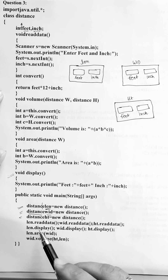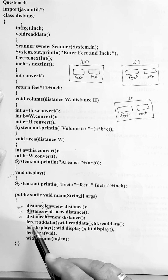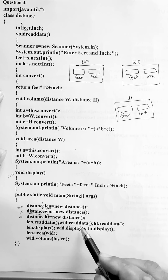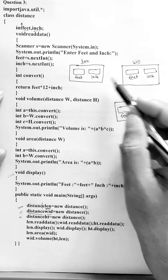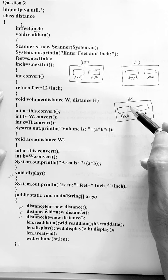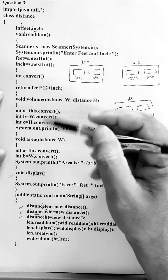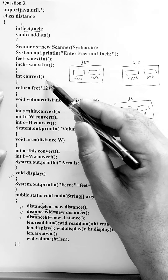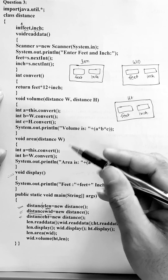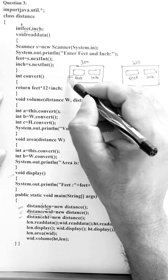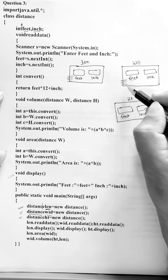After that, look at the next line of main: length.readData, width.readData, and ht.readData. This means all three objects will also have all the member methods of this class — for example, convert, volume, area, and display. All four of these methods will exist in all these objects.